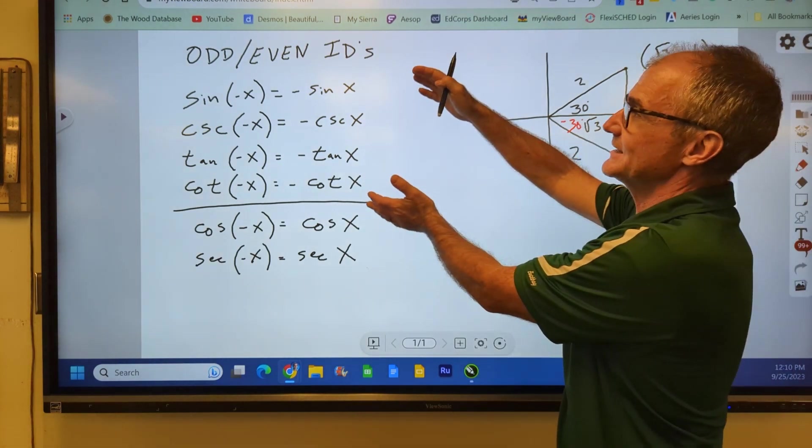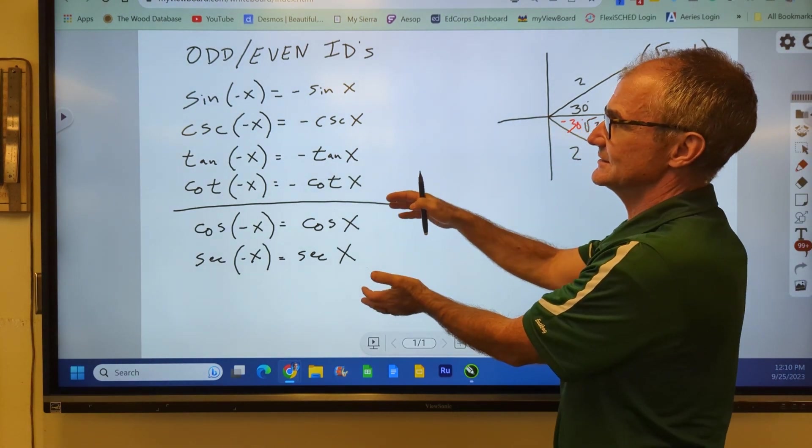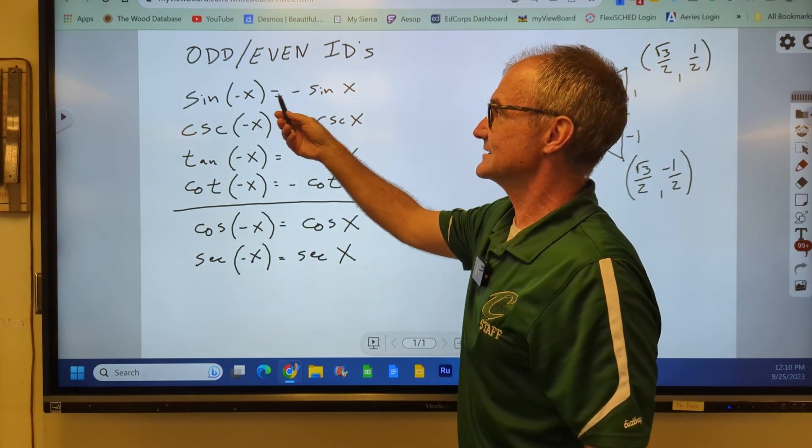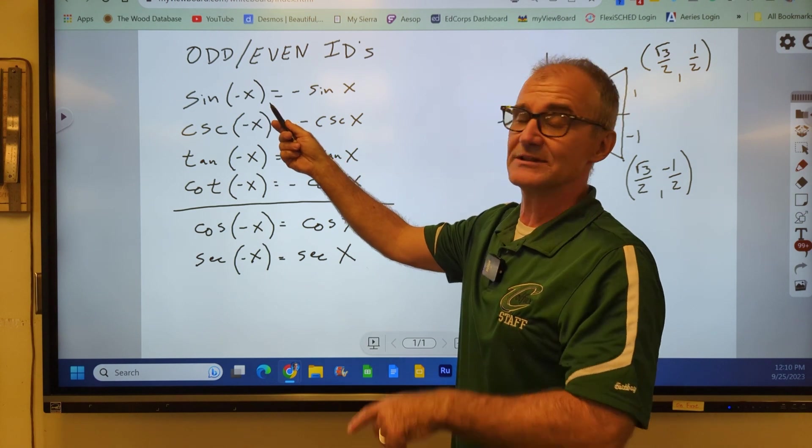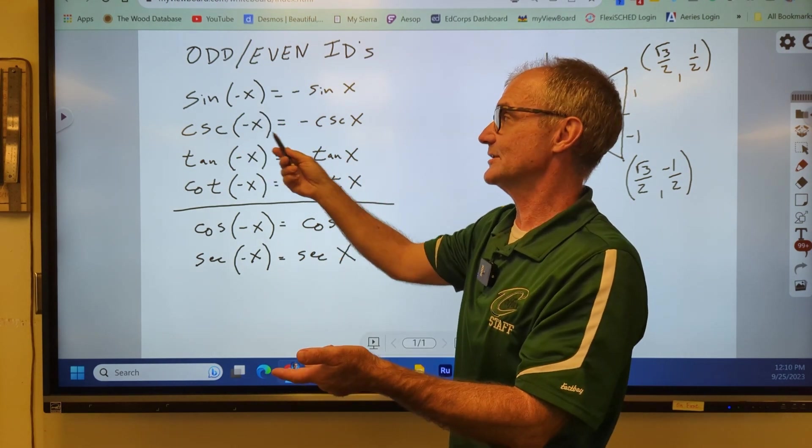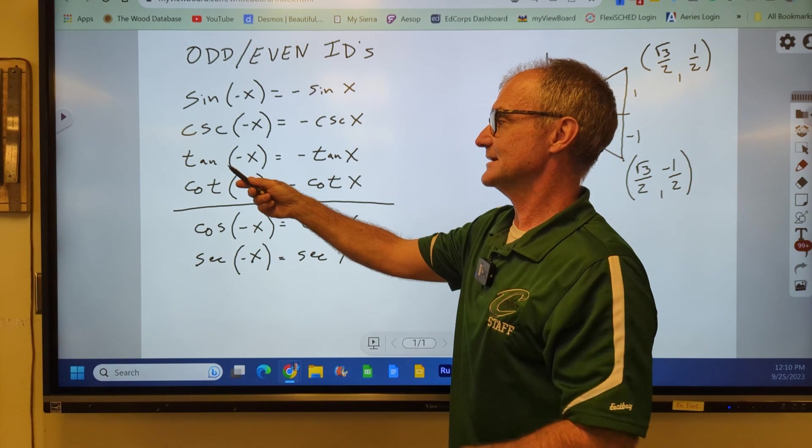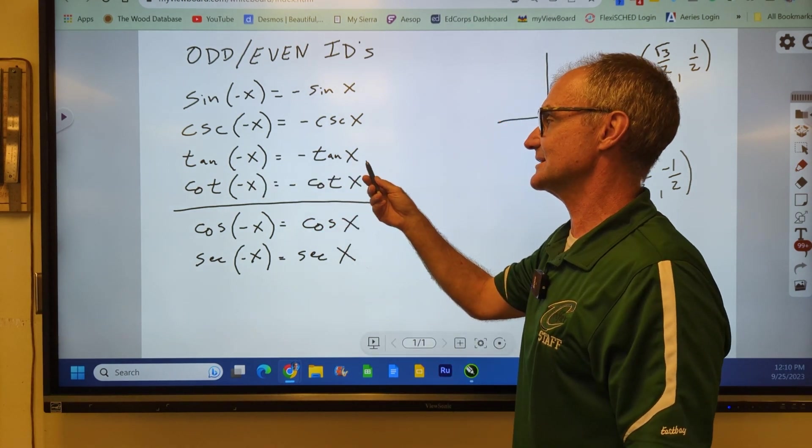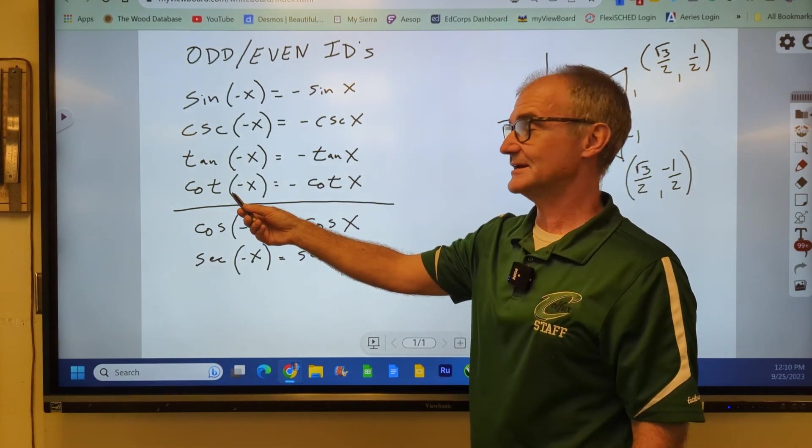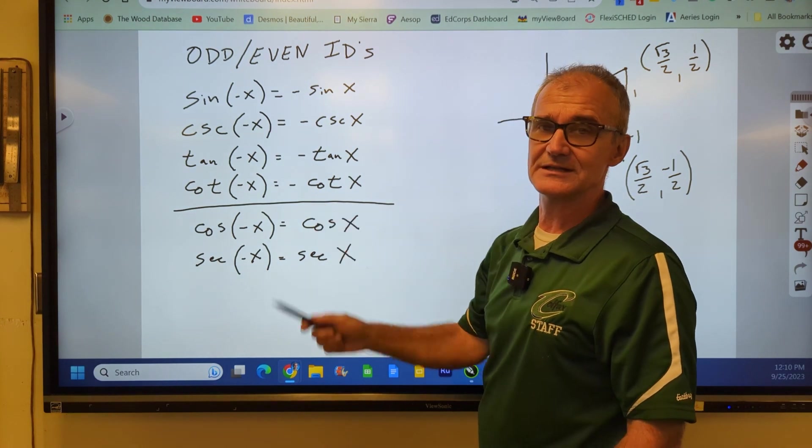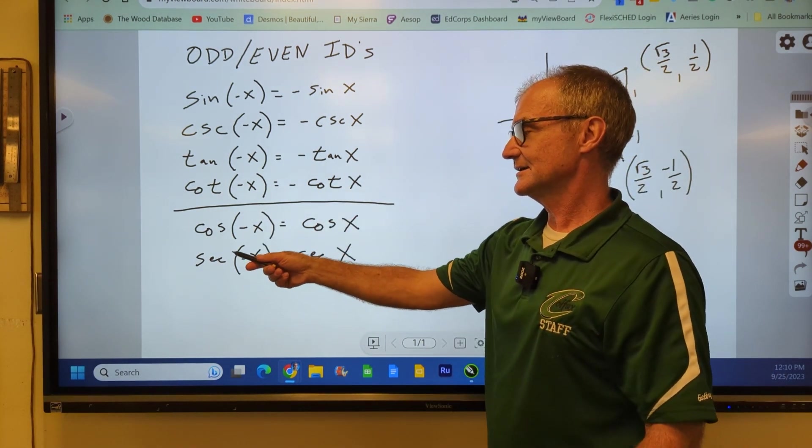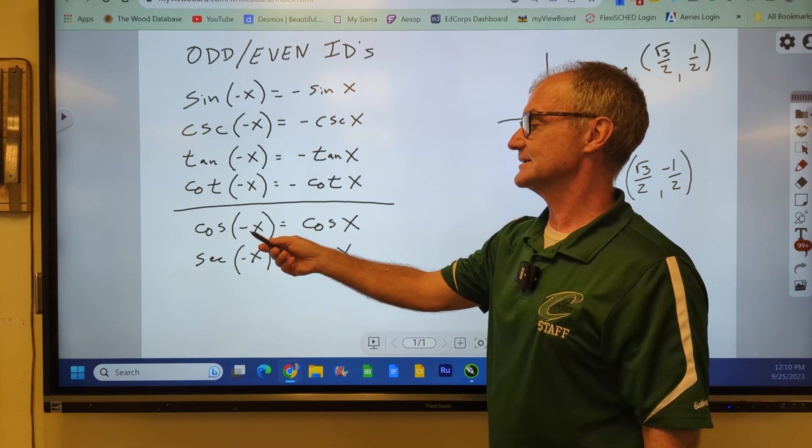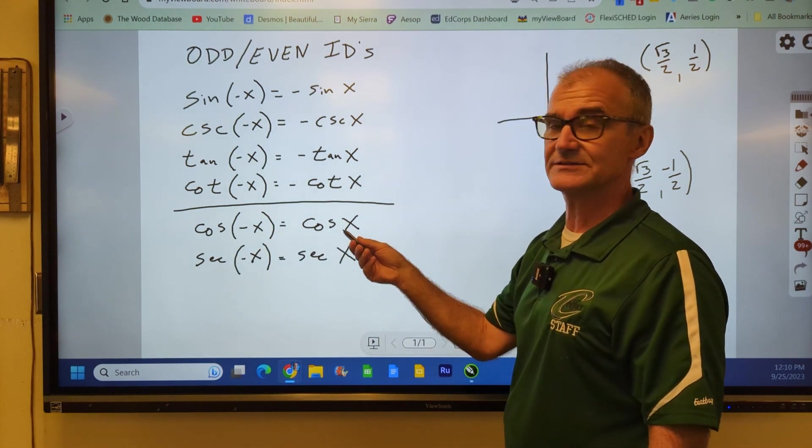There are four odd identities and two even. Sine of negative x equals negative sine of x is an odd identity. If that's true, then its reciprocal cosecant would also be true. Tangent's an odd. Tan of negative x equals negative tan of x, and its reciprocal cotan would have that same property. The two even identities are cosine and secant, again the reciprocal. Cosine of negative x is equal to cosine of x.